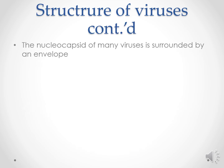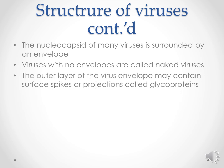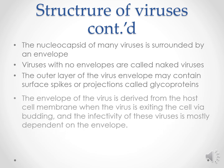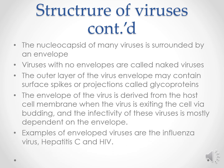Regarding the structure of viruses: the nucleocapsid may either be surrounded by an envelope. Viruses with no envelopes are called naked viruses. The outer layer of the virus envelope may contain surface spike projections called glycoproteins. The envelope of the virus is derived from the host cell membrane when the virus is exiting the cell through budding. The infectivity of enveloped viruses is dependent upon this envelope. Examples of enveloped viruses are influenza virus, hepatitis C virus, and HIV.